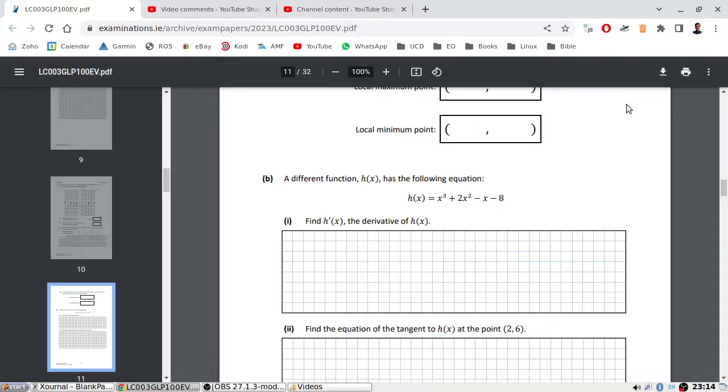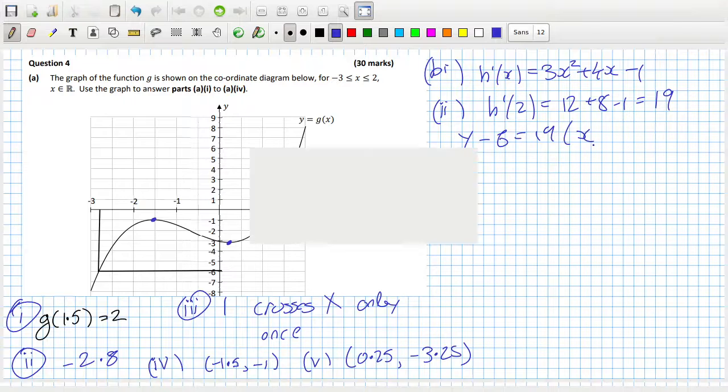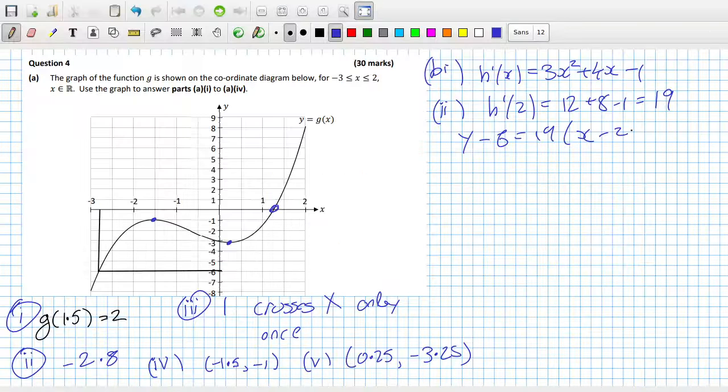So if we sub in 2, we get the slope. 2 squared is 4, times 3 is 12, plus 8, minus 1, that's 20 minus 1 is 19. And the formula is y minus y1 equals m times x minus x1. So that's y equals 19x minus 2 times 19.